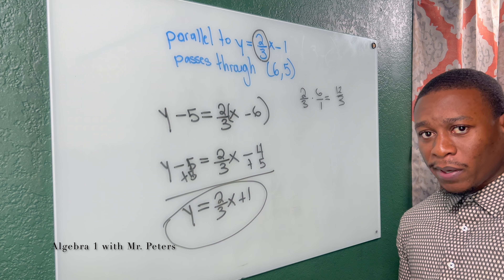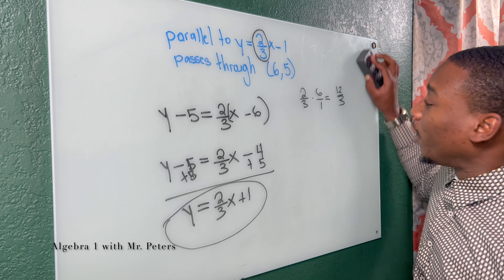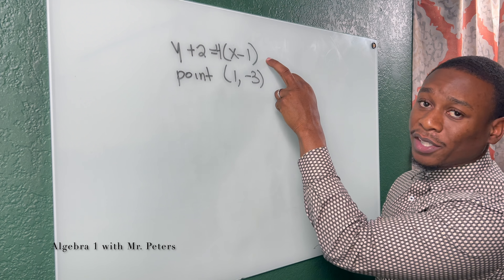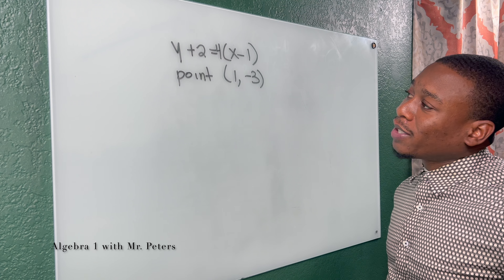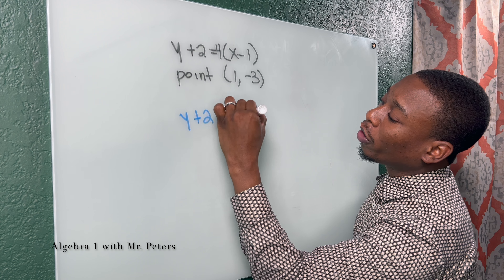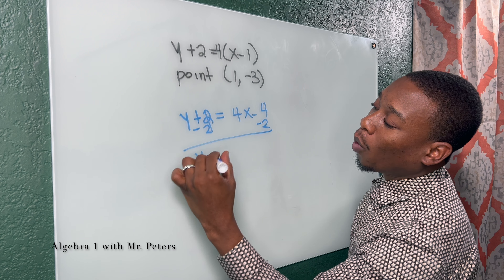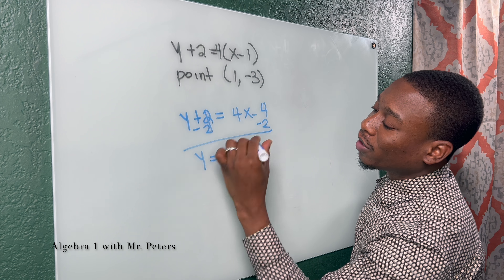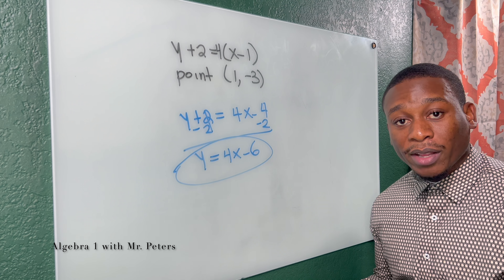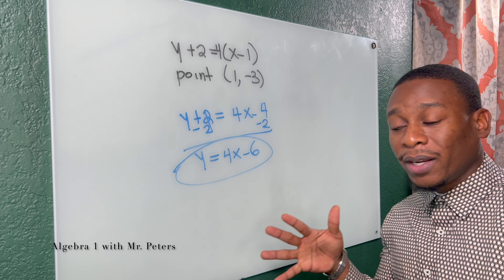Before we go to perpendicular lines, we're going to look at one more example — and this example you want to see because it has a trick in it. The first thing we need to understand is we need to simplify the given equation first. Once I simplify, we get: Y plus two is equal to four X minus four. We subtract two on both sides: Y is equal to four X minus six. Now that we've simplified this equation, we can create the equation for the parallel line passing through the point (1, -3).